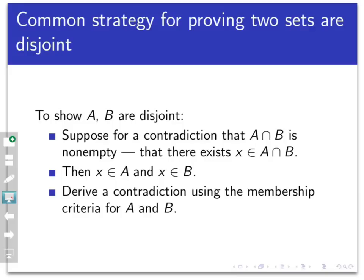Oftentimes two sets are proven to be disjoint by contradiction. To prove that A and B are disjoint — remember that means A intersect B is the empty set — that's a statement phrased in the negative: A intersect B is empty, there is nothing in it.